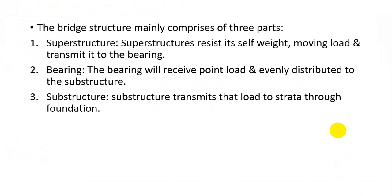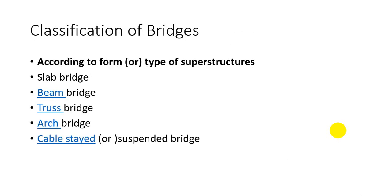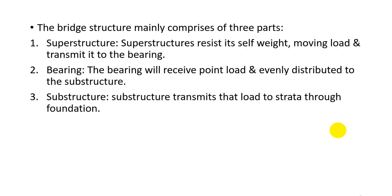The bridge structure mainly comprises three parts: number one, superstructure; number two, bearing; and number three, substructure. The superstructure consists of slabs, rails, and parapets. The bearing is below the slab and above the piers, transferring the load to the substructure. The substructure consists of columns or foundations which transmit the load to the ground below — it may be a hard stratum or any type of foundation.